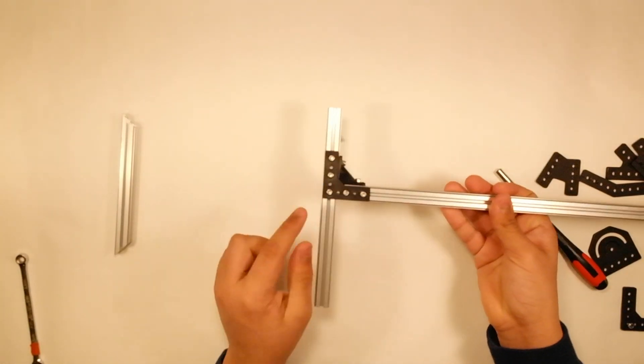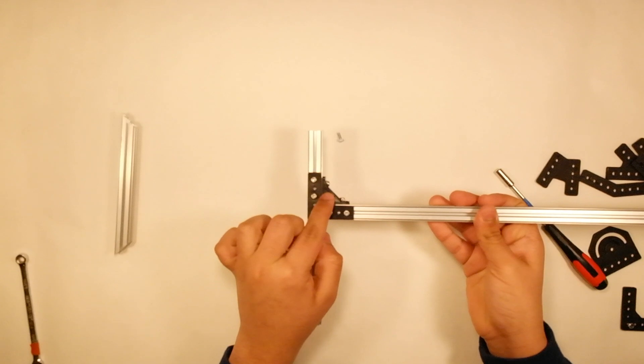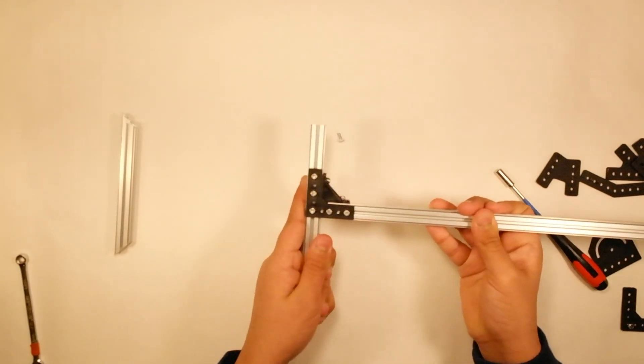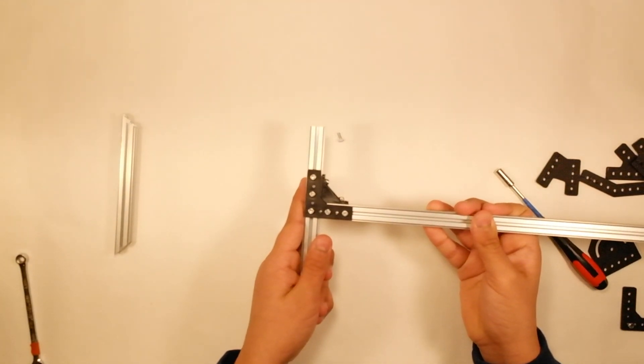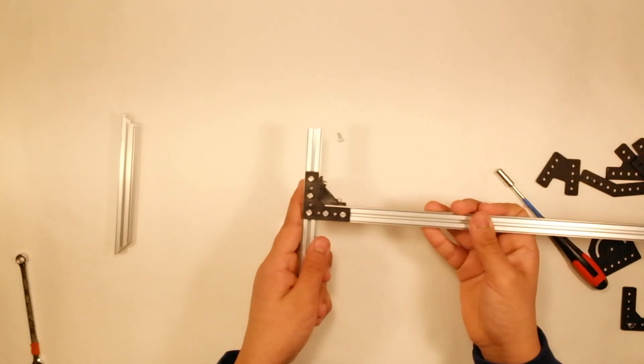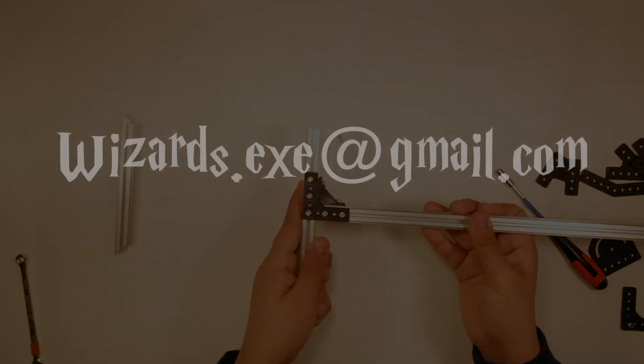Here you can see I've made a nice strong 90 degree joint using both the 90 degree bracket that goes on the side of the REV as well as the inside angle bracket. Thank you for watching, comment or email wizards.exe at gmail.com if you have any questions.